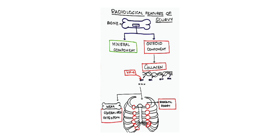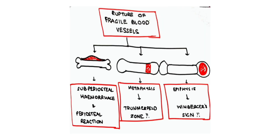The costochondral junctions swell even on normal respiration because the bone is so weak — this is scorbutic rosary. In scurvy, there is defective osteoid but normal mineralization. The cartilage grows slowly but calcium deposits at a normal rate, leading to excess calcium deposition, which produces Frankel's line and Pelikan spur.